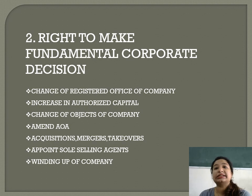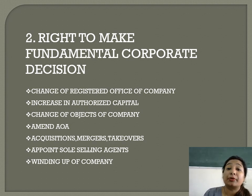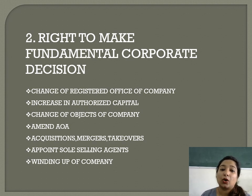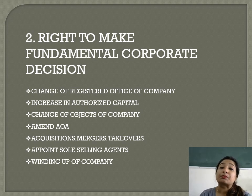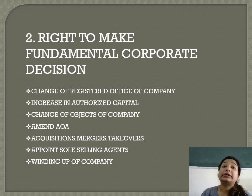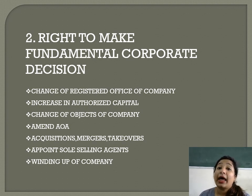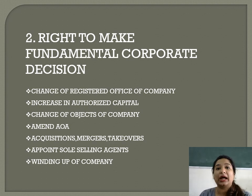If we have to increase our authorized capital, there is a long process for that, and first we have to take permission from members, who have the right to give their decision on this. Next is change of objects — once you have registered your company with an objective, for example shoe manufacturing, you cannot change your objective freely. However, the government does allow you to change the objective of a company under certain conditions, and for that, first we need to take permission from members.